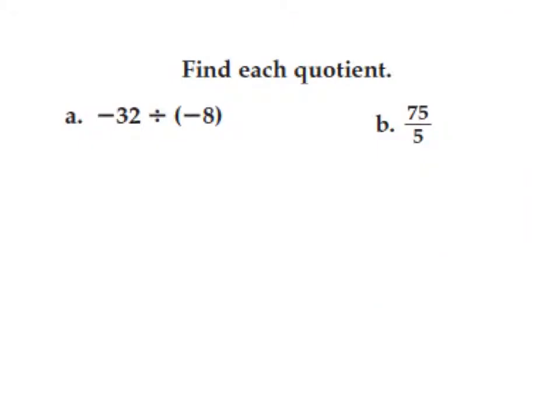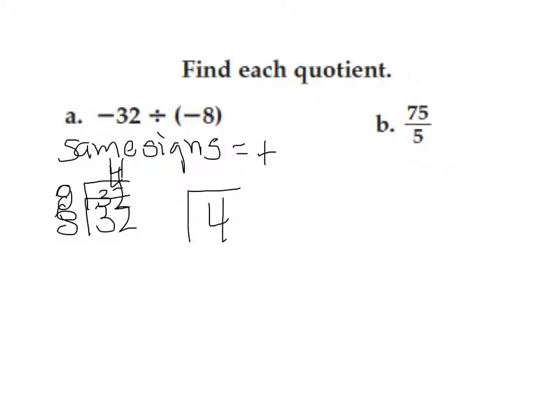All right, on this slide we find two problems. The directions say, find each quotient. So, we're going to go ahead and look at problem A and see negative 42 divided by 3. Same signs, so I know the answer is going to be positive. So, that means I'm just going to go ahead and divide. 32 divided by 8 is 4. So, my answer is a positive 4.